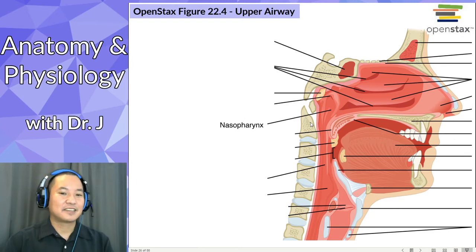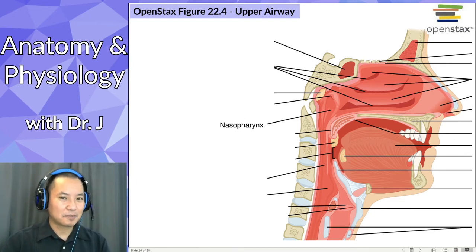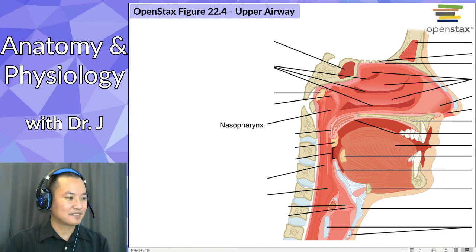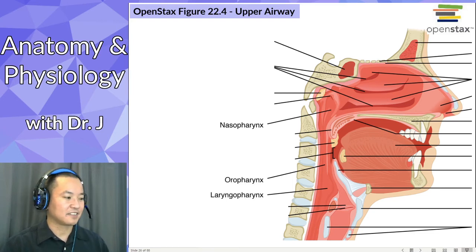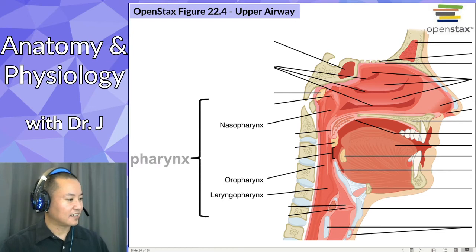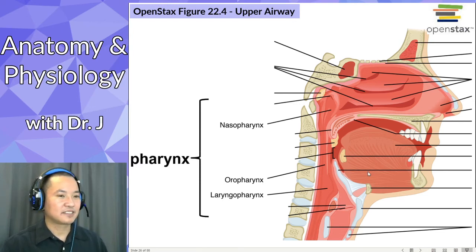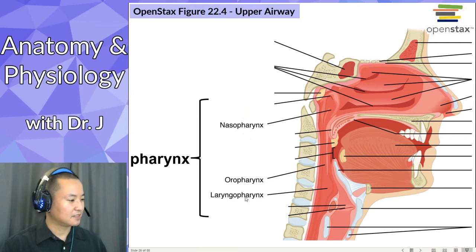All right, so let's talk about the nasal cavity — we'll talk more about the oral cavity when we get to the digestive system, but now let's talk about the pharynx. There are three main regions to the pharynx: we have our nasopharynx, our oropharynx, and our laryngopharynx. These make up the three regions going from superior to inferior.